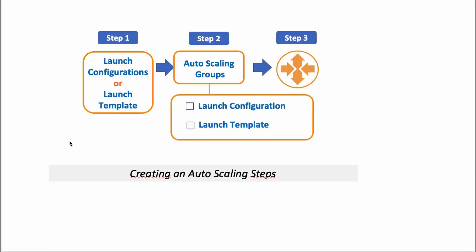While creating an autoscaling group, first we need a launch configuration or launch template. Autoscaling will create a new instance according to the features determined by the launch configuration or launch template. When creating an autoscaling group, we can choose either one that we created before. However, AWS recommends using launch templates to get the latest features from EC2. Let's go on with launch template.